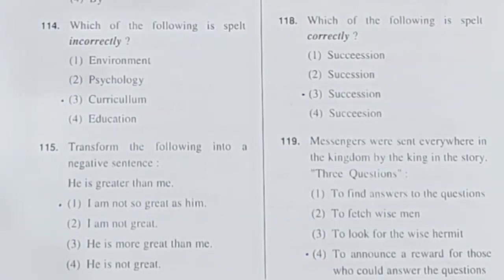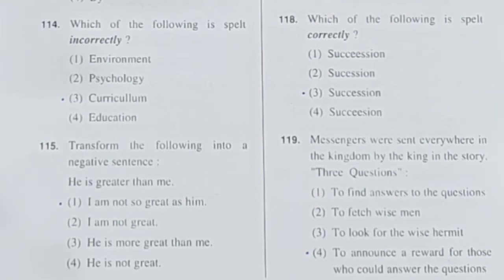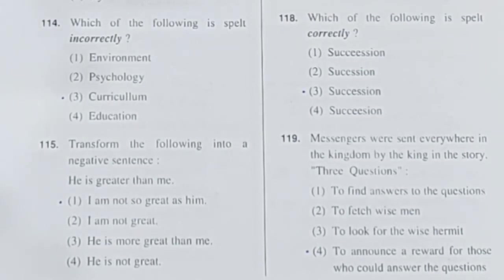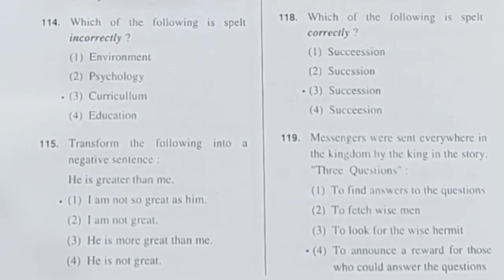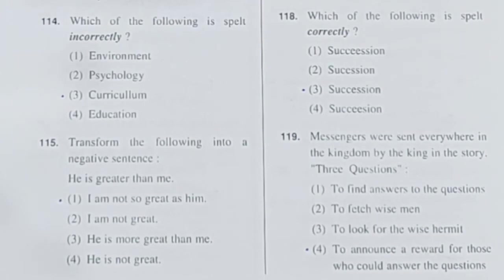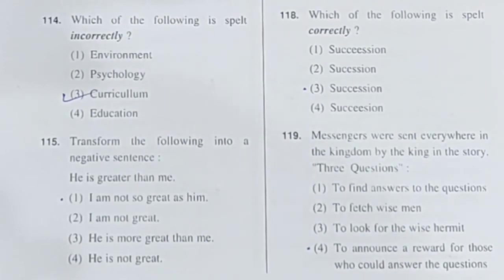Question 114: Which of the following is spelt incorrectly? Options: environment, psychology, curriculum, education. Environment, psychology, and education are all spelled correctly. The spelling of 'curriculum' is C-U-R-R-I-C-U-L-U-M. In the given option, double 'L' is written, but single 'L' is correct. So 'curriculum' is incorrectly spelt. Option 3 is correct.